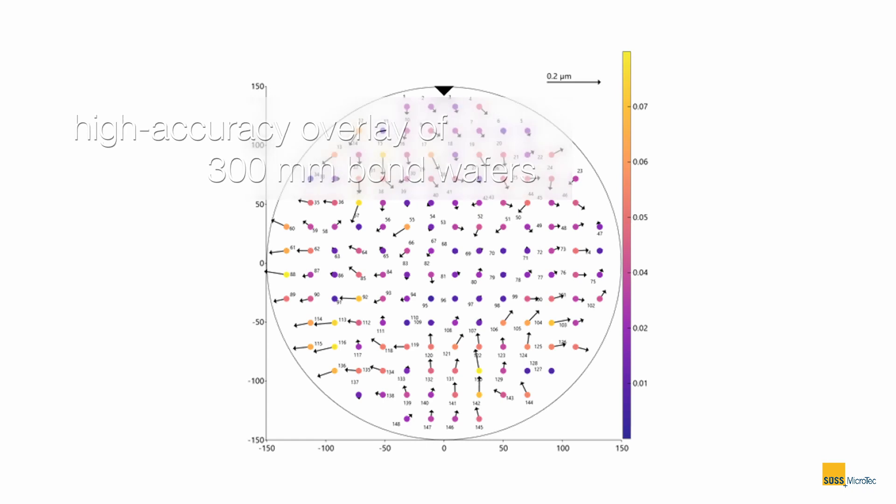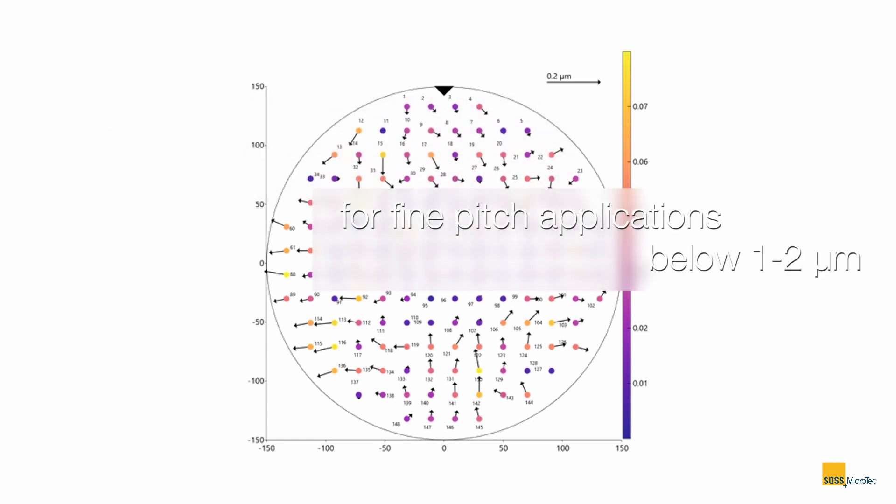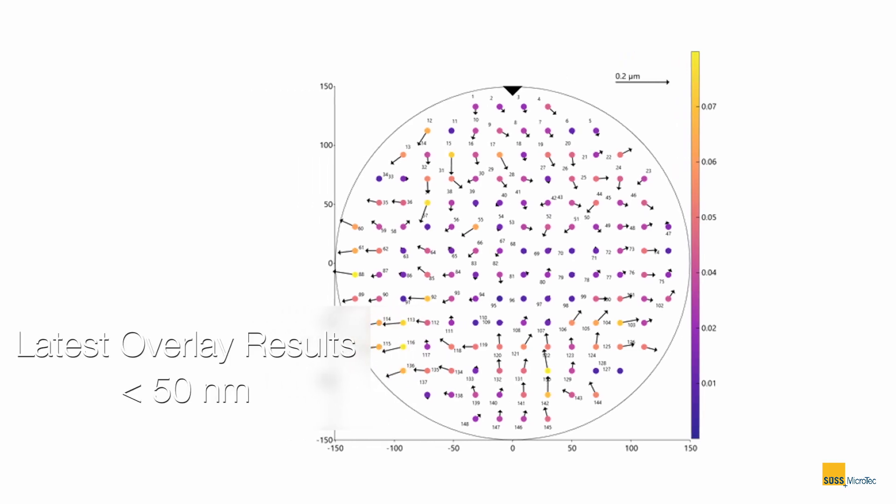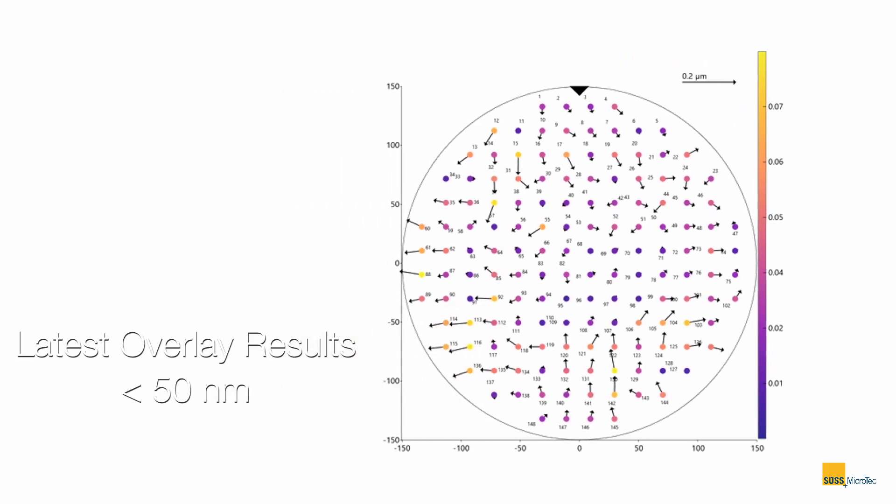This is especially critical for fine-pitch applications below 1 to 2 microns, where high-end tool performance is mandatory. As of today, the XBS300 can achieve less than 50-nanometer overlay performance on 300-millimeter process wafers.